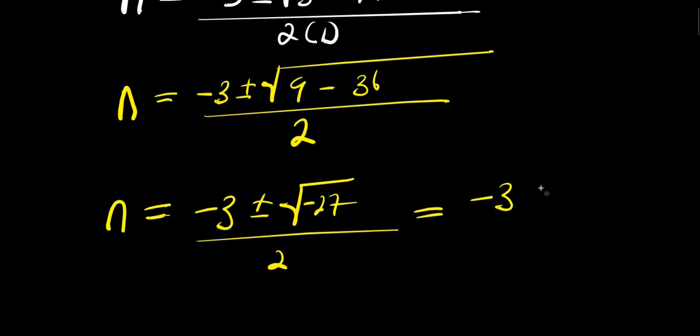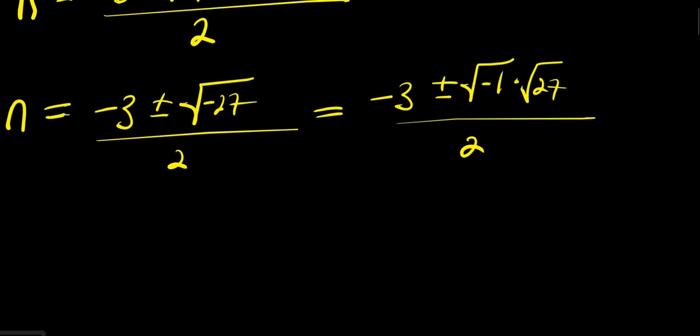So this equals -3 plus or minus √(-1) times √27, divided by 2. So from here we have n = -3 plus or minus i times √27.